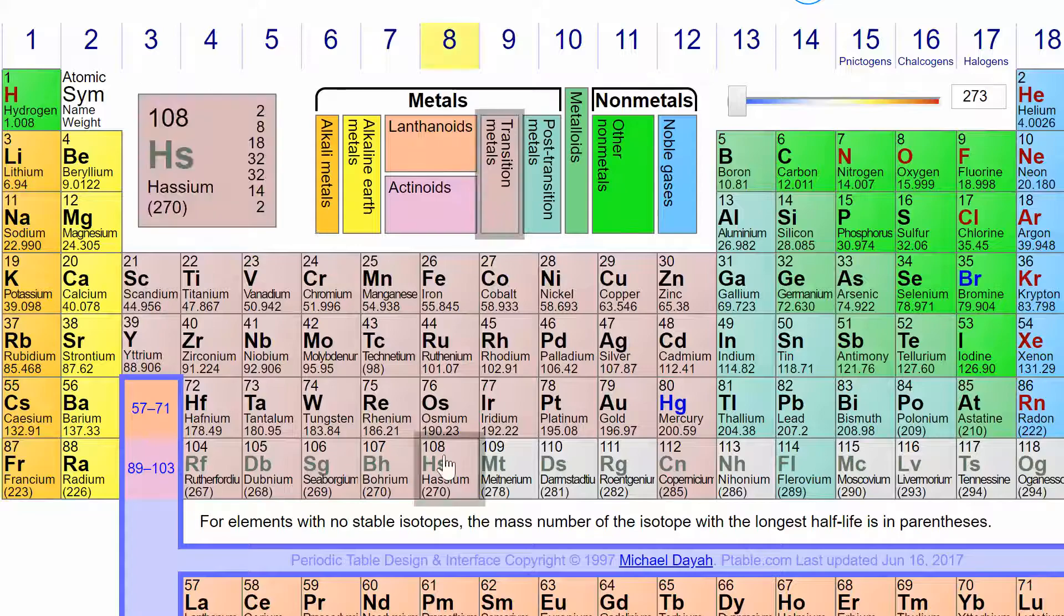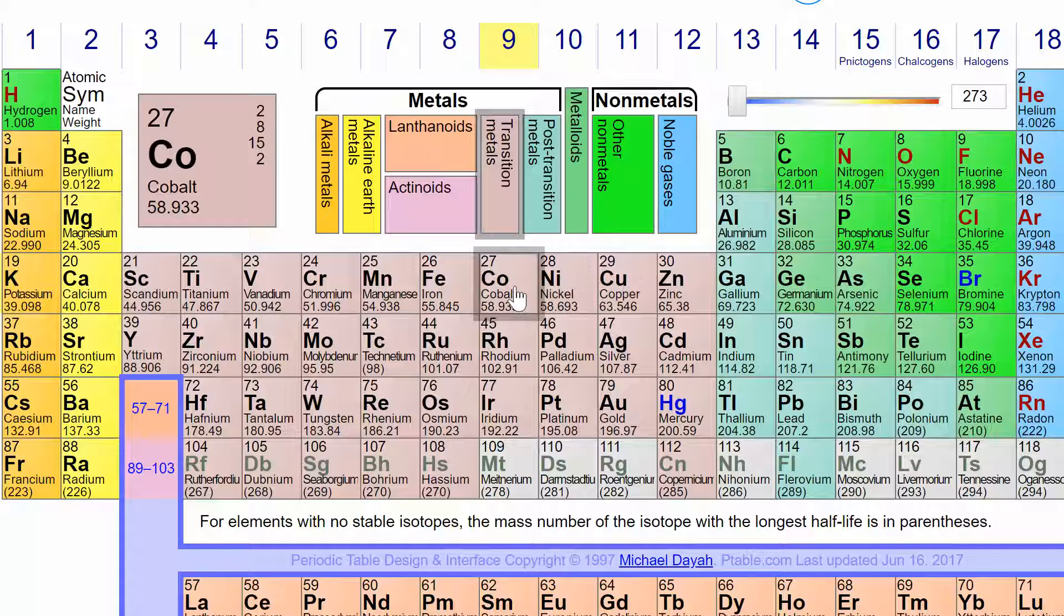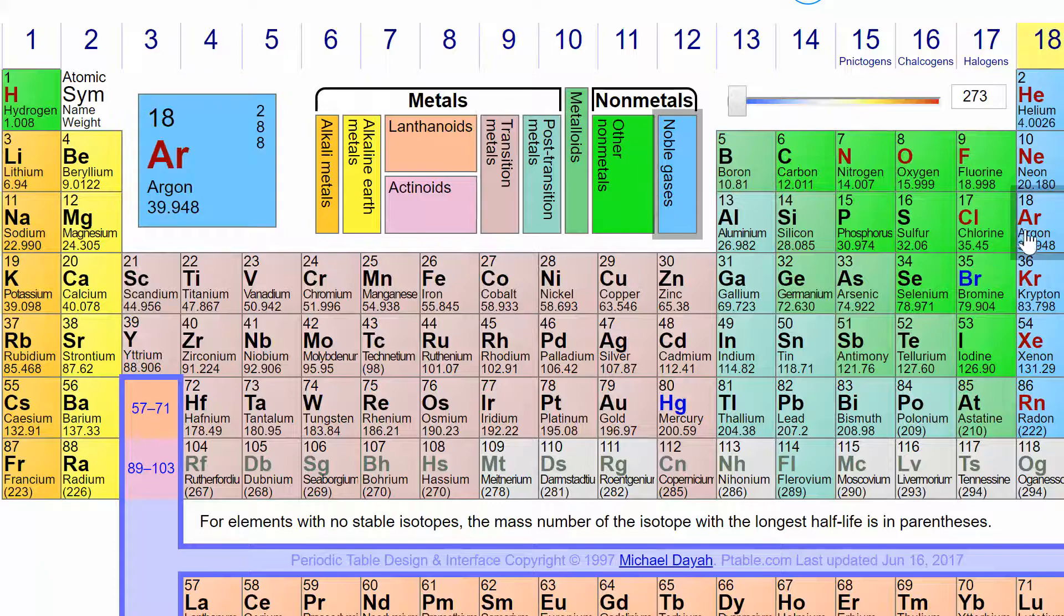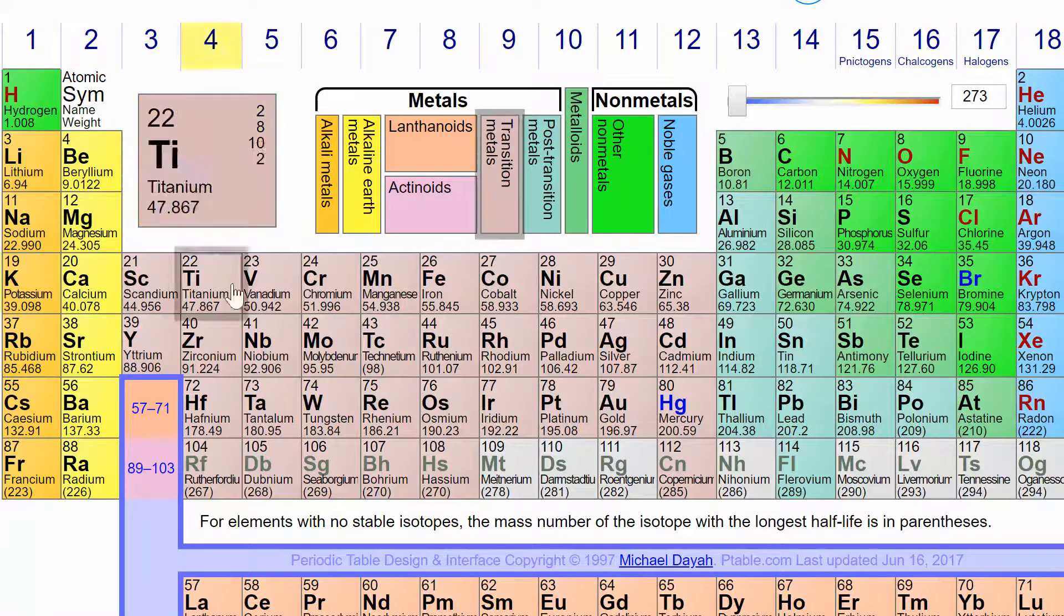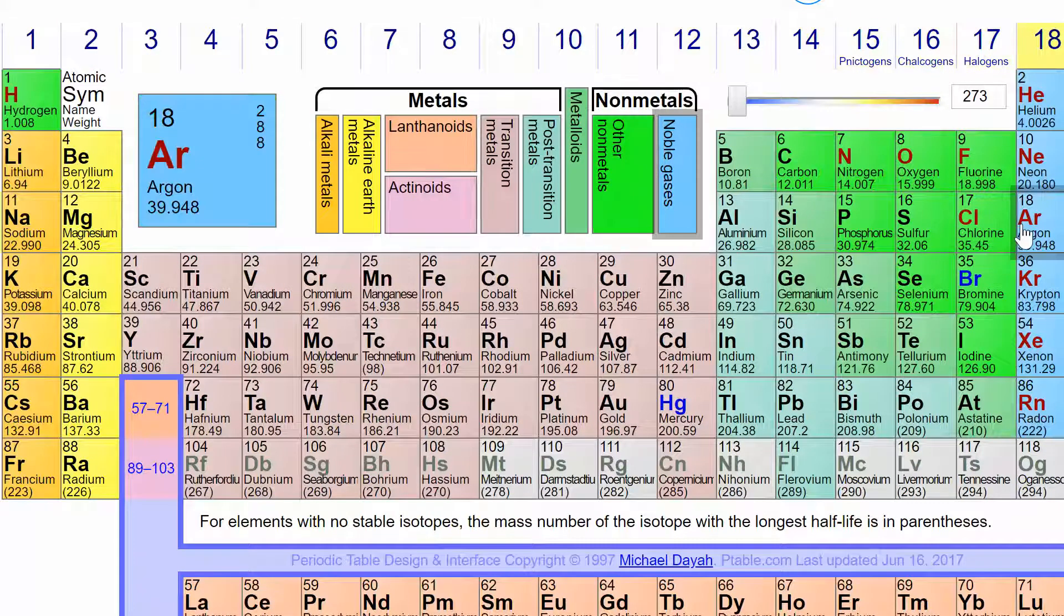So let's go over to the periodic table. The first one we want to look at is cobalt. So cobalt is here, and we're going to write the condensed. So we'll go up to the row before. So we're in row four, and we're going to go up to row three, which is here, and we'll start with argon.